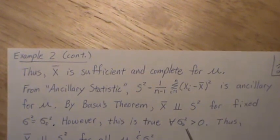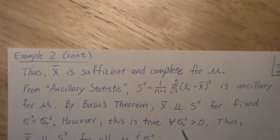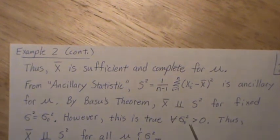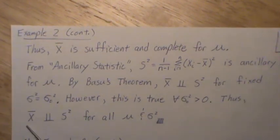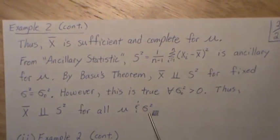However, this is true for every value, every sigma not squared we pick in the parameter space of theta. It's true for every one of them. So thus, X bar and S squared are independent. And this is for all mu and sigma squared.